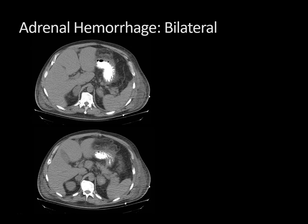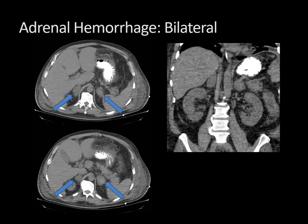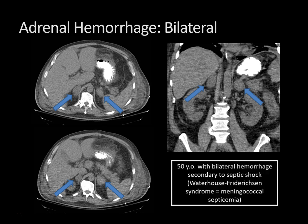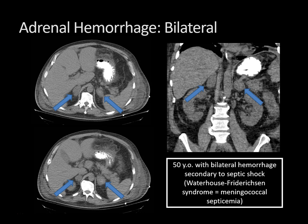Let's look at another case. You can see bilateral adrenal masses, so right away you're thinking this is likely non-traumatic adrenal hemorrhage since it's bilateral. The coronal image also shows bilateral mildly heterogeneously hyperdense adrenal masses just superior to the kidneys. This was a patient with Waterhouse-Friderichsen syndrome — bilateral adrenal hemorrhage secondary to meningococcal septicemia, an infectious process that can lead to shock and massive hemorrhage into both adrenal glands. It's also characterized by hypotension and can evolve into disseminated intravascular coagulation (DIC), so important not to miss this.